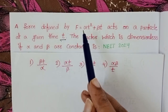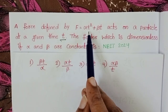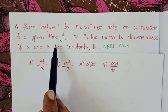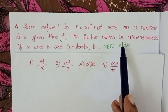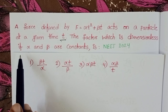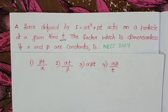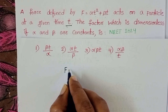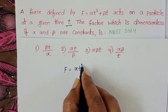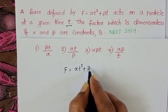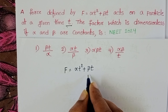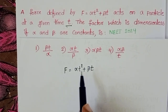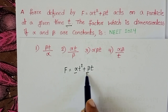A force defined by F equals alpha t squared plus beta t acts on a particle at a given time t. The factor which is dimensionless if alpha and beta are constants. Given force F equals alpha t squared plus beta t, where alpha and beta are constants, F is force and t is time. We first find out the dimensions of alpha and beta.